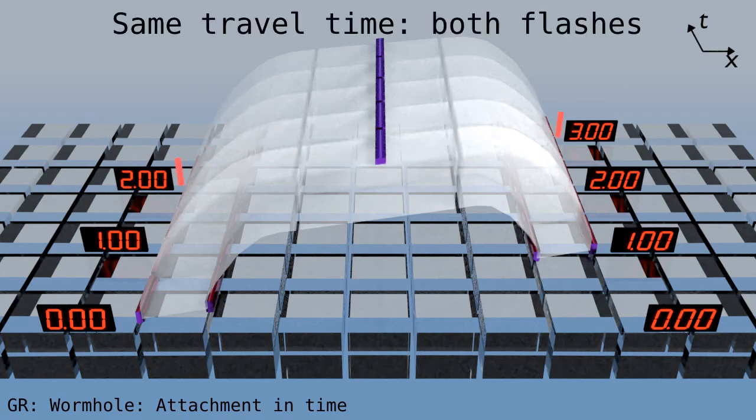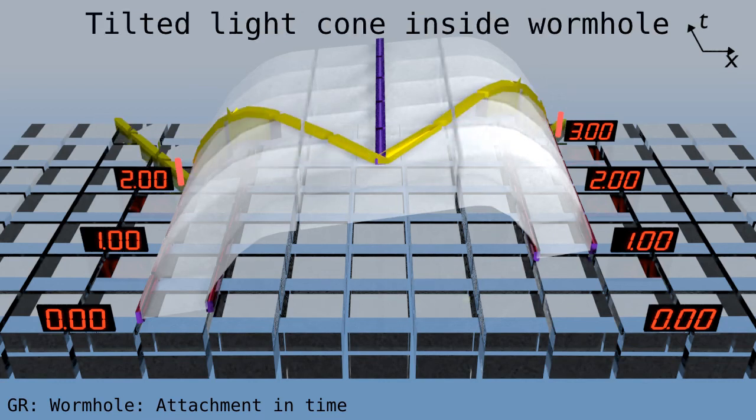The internal or proper travel time is the same in both directions, but the flashes appear at different times. If we now show the light cone, we see that it's tilted inside the wormhole.